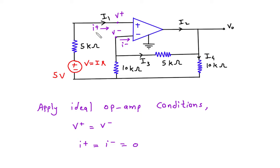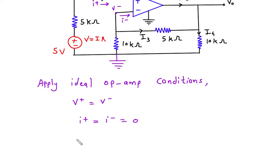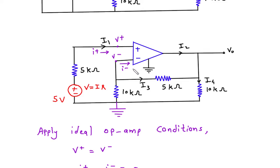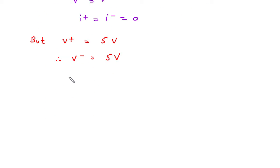Here we can see this voltage V+ — we will assume this as ground, this is the reference node or ground node. V+ is equal to 5 volt, and since V+ equals V−, V− is also equal to 5 volt. This I+ is equal to I1 and it is equal to 0.